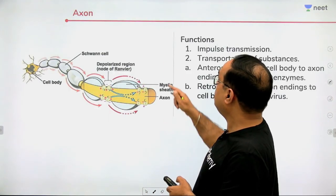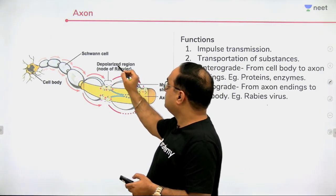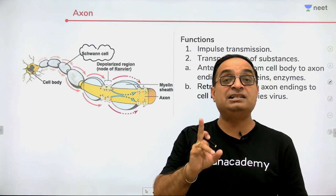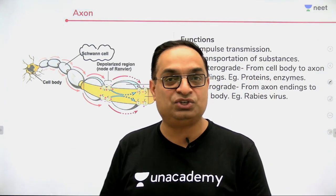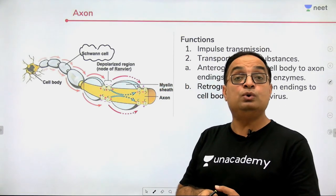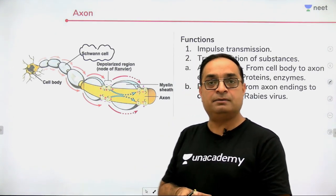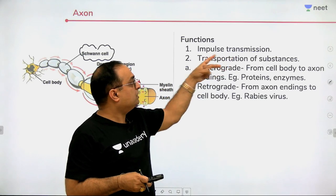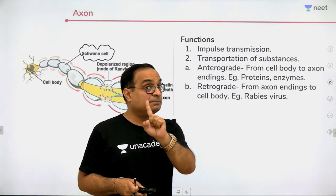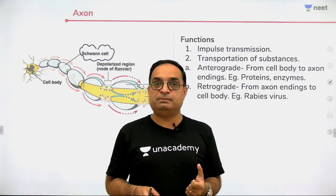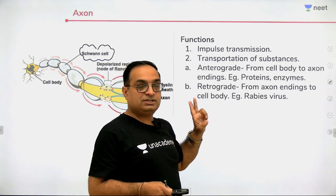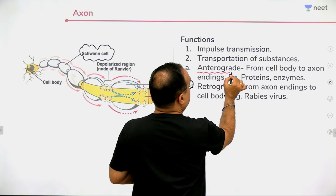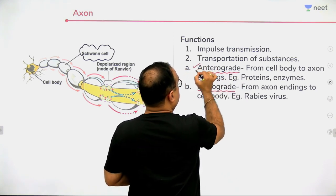Next let's look at the axon in an enlarged view. The Schwann cells wrap around the axon to form the myelin sheath. The axon has two main functions: number one, impulse transmission; number two, transportation of substances. There are two types of axonal transport — anterograde and retrograde. Anterograde is from the cell body towards the axon endings, carrying proteins and enzymes.